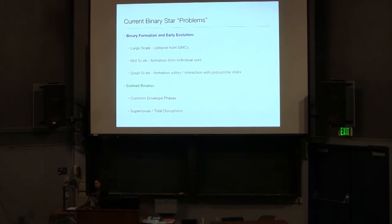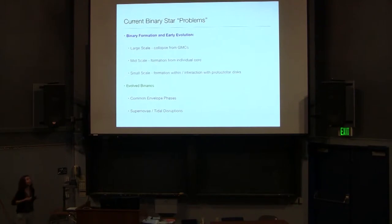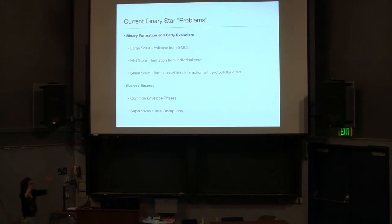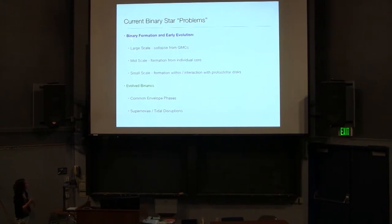If we're trying to think about what problems we want to attack in binary star formation, you can divide them into three different scales. There's the large-scale problem where you're worried about the formation of binaries from the collapse of the giant molecular cloud — touching base with what Mark was talking about yesterday. If you want to go further down, you can think about mid-scale binaries, where you're not worrying about the background giant molecular cloud but just focusing on one core. But even then, there's a lot of dynamic range between that core scale and where your stars are going to end up. That brings us to the small-scale problem, where you're worrying about the interaction of those two young forming stars and their protostellar disks.